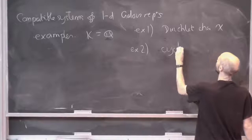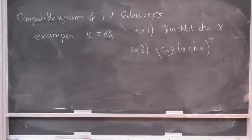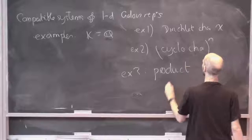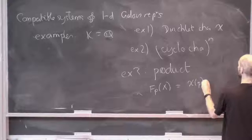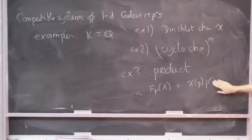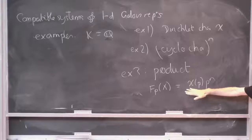A more interesting example: the cyclotomic character to the power n. You can also multiply them together — take a product. You get that f_p(x) is just chi(p) times p^n. For every l-adic representation with l not equal to p, Frobenius at p goes to chi(p) times p^n, and that's independent of l.